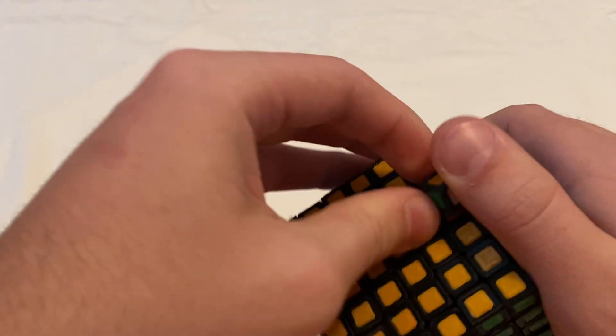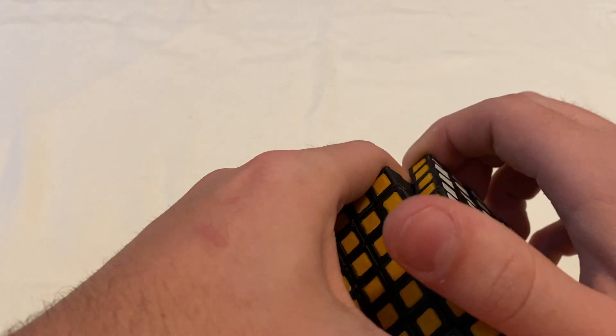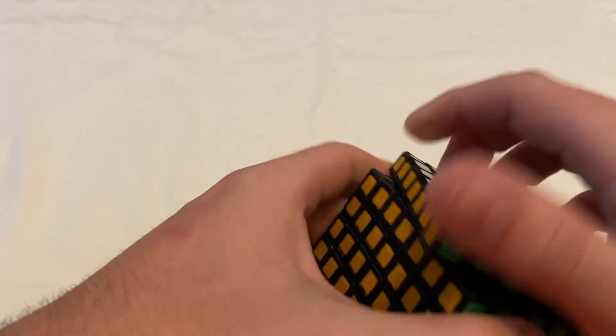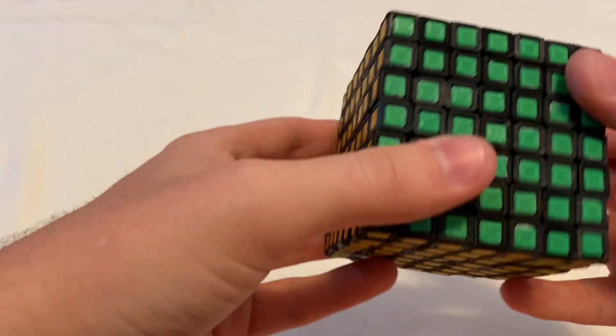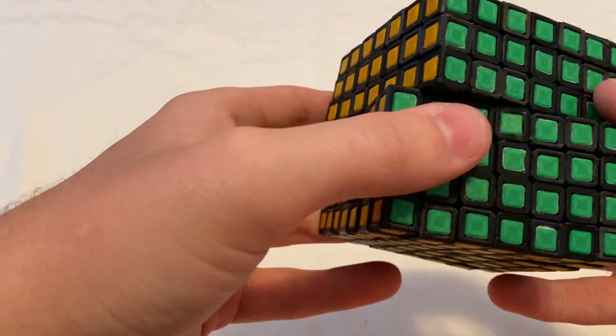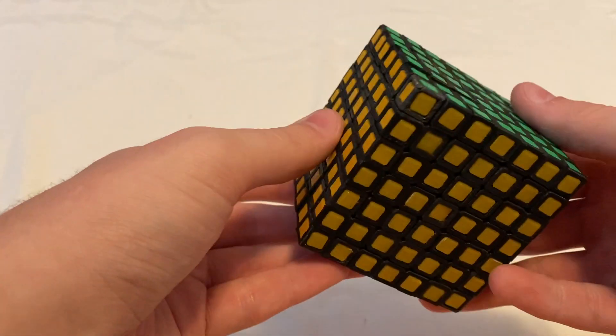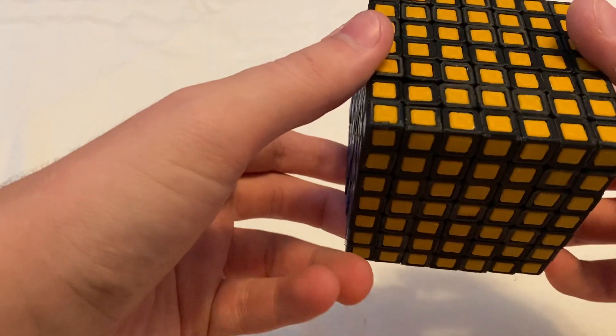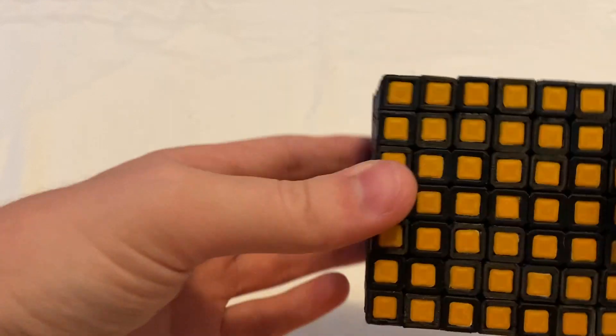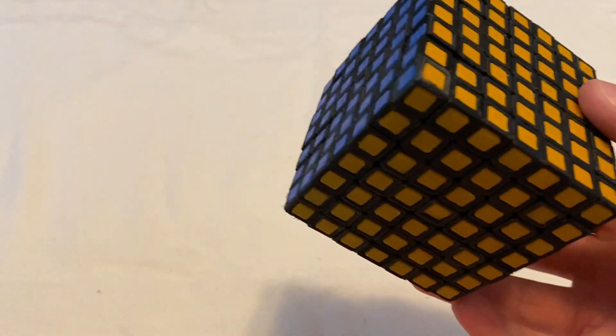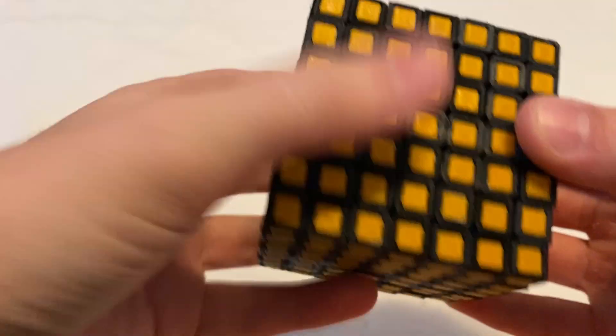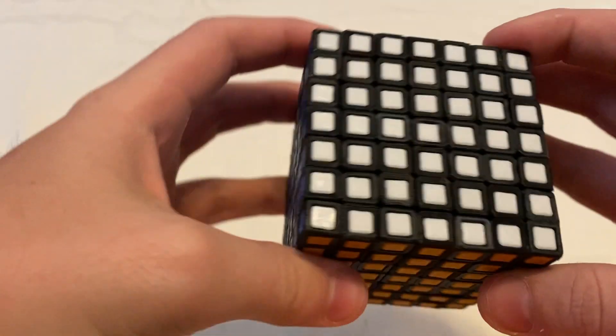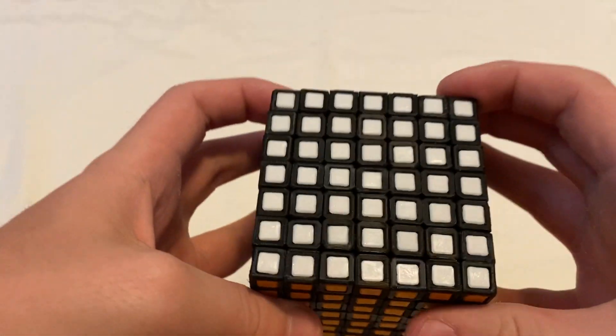So I got this idea a while ago when I was trying to figure out different mechanisms for big cubes that would allow for overhanging corners. This puzzle does work for the most part - it's fully functional technically - but there is one fatal flaw and I will show you.